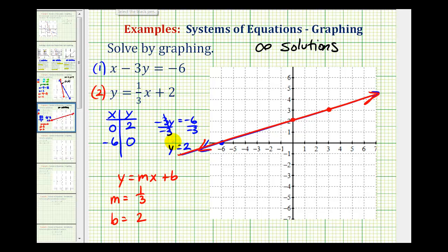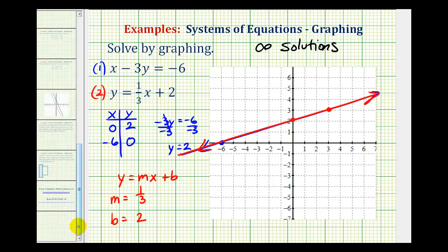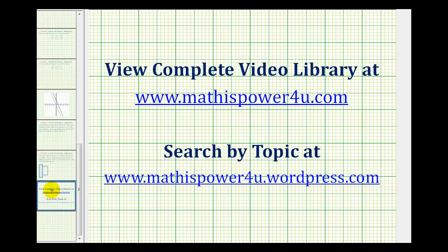And when this occurs, we classify the system as consistent, because there is at least one solution. But because the two lines coincide, the equations are multiples of one another. So we say the equations are dependent.